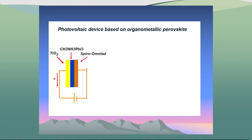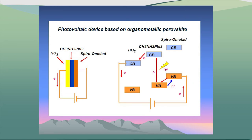The energy band diagram for the device is presented here. This is our molecule — it's a perovskite — and these are the layers: the electron transport layer and the hole transport layer.